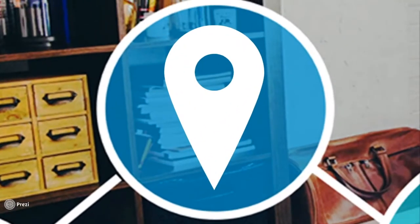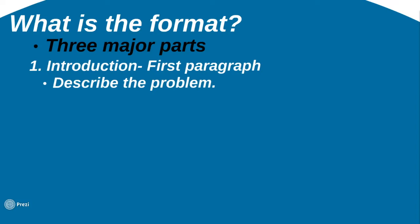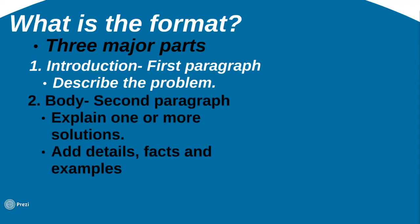Let's discuss the format — the parts of a problem-solution essay. There are three major parts. The first is the introduction, or the first paragraph. Here you describe the problem. For example, if your topic is stopping the spread of COVID-19, you describe what the problem is: we are in a global pandemic, we are in quarantine and total lockdown, and we need to stop spreading the disease. You explain and describe what the main problem is and what is happening.